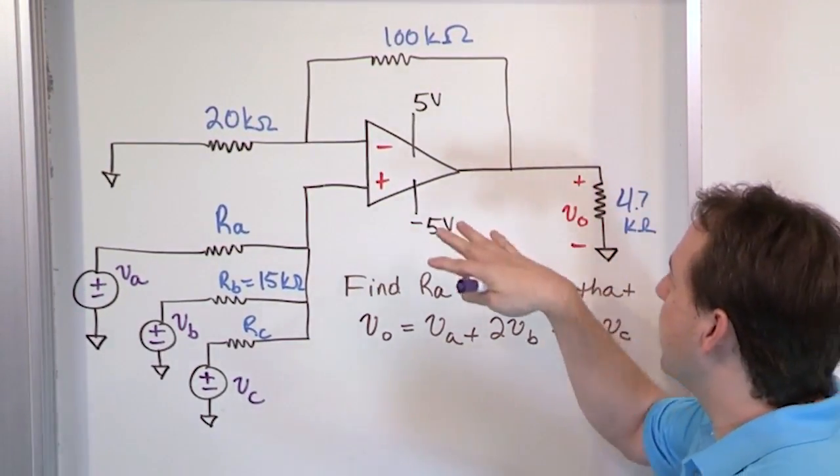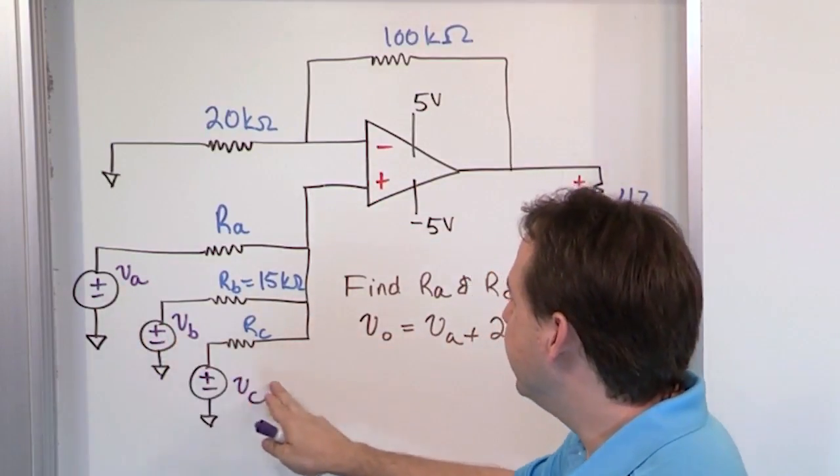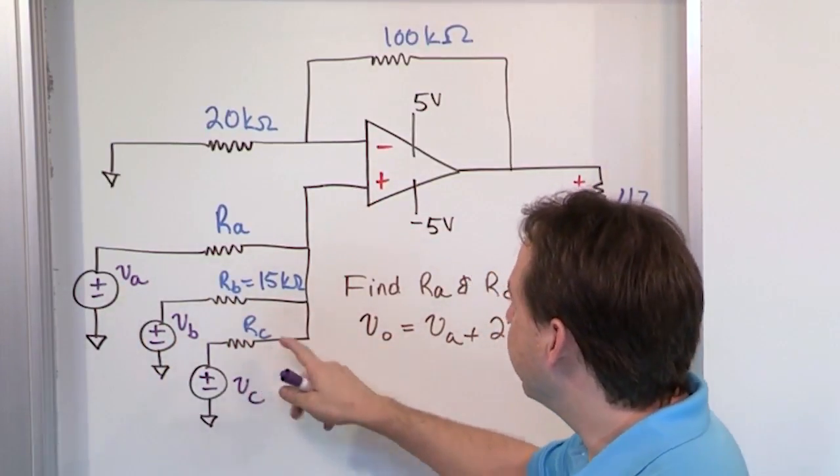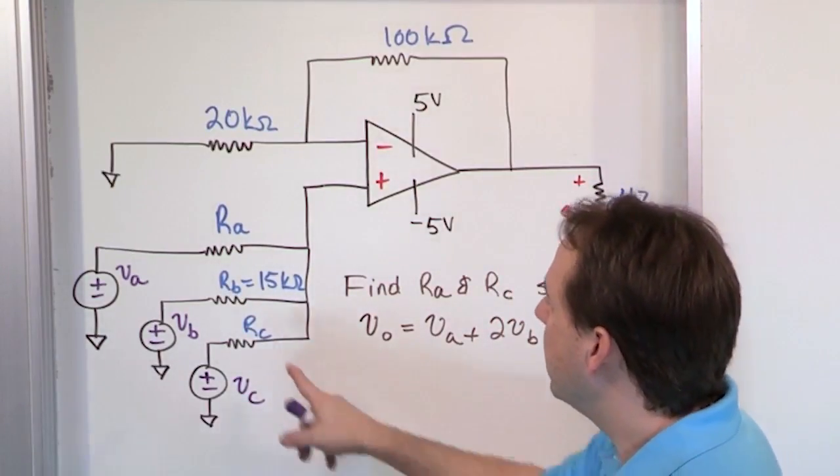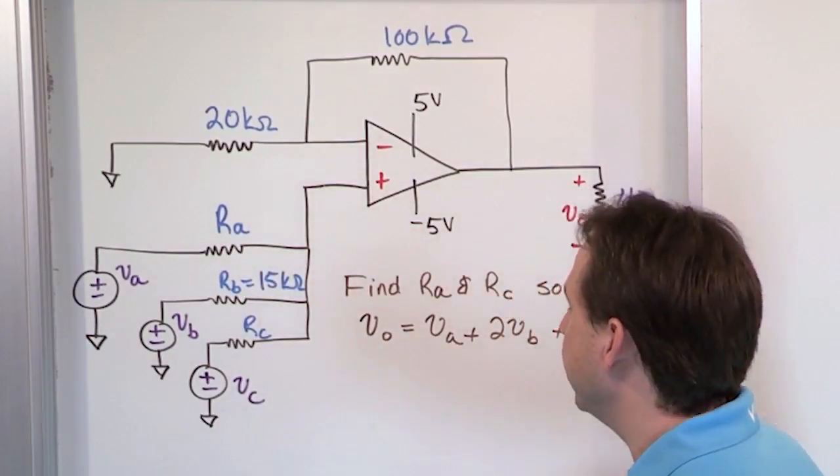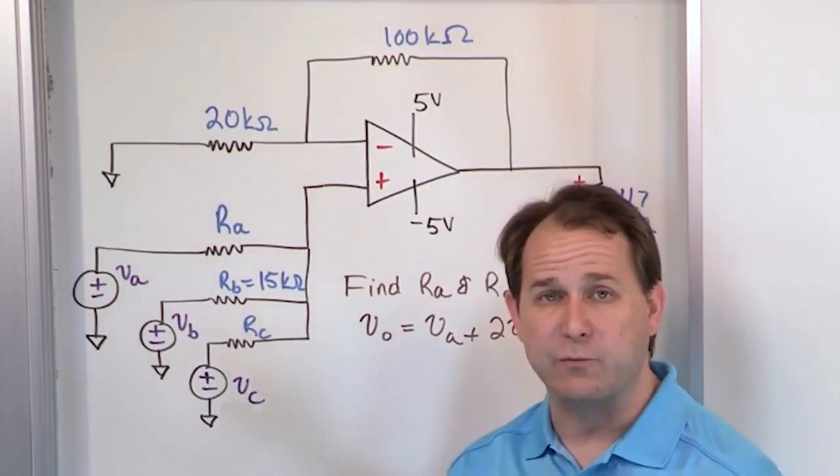It is a non-inverting amplifier with multiple inputs. Each input is A, B, and C, and they're all driven through different resistors. The only resistor we know the value of is the middle one, 15 kilohms. We're calling him RB. RA and RC we don't know the values of. We do know the values of these guys up here, so we could calculate the gain right away.